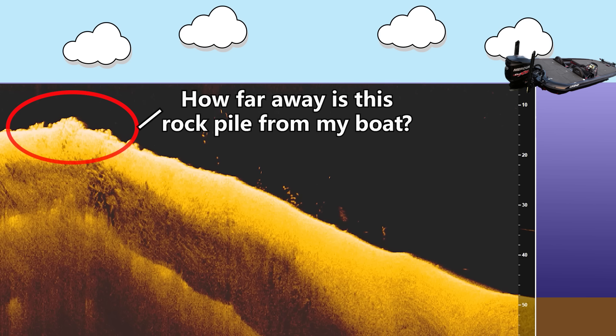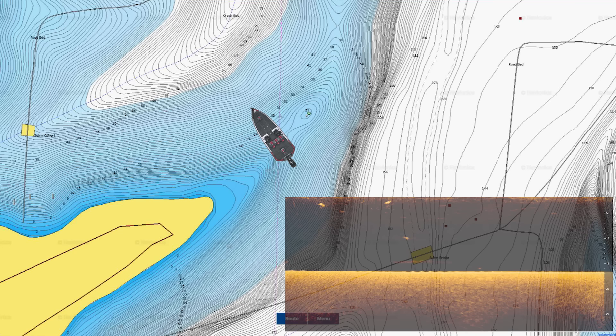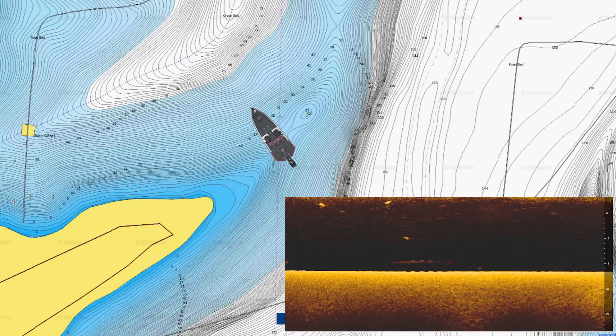The most common question I get is where a specific point in the down imaging image is in relation to the boat — for example, how far away is a brush pile you see on screen. This is a very difficult question to answer if you don't know what direction and at what speed the boat is moving. To explain this concept, I made a graph of a boat on top of a lake with the corresponding down imaging image based on what the boat does as it drives around.